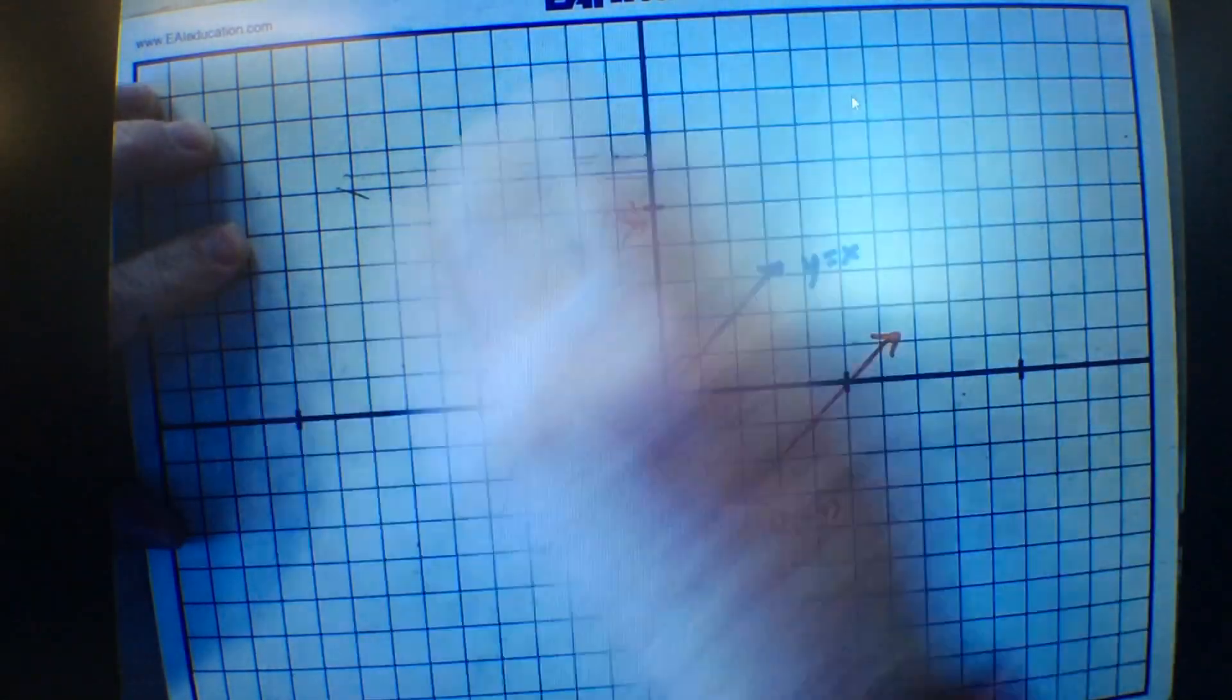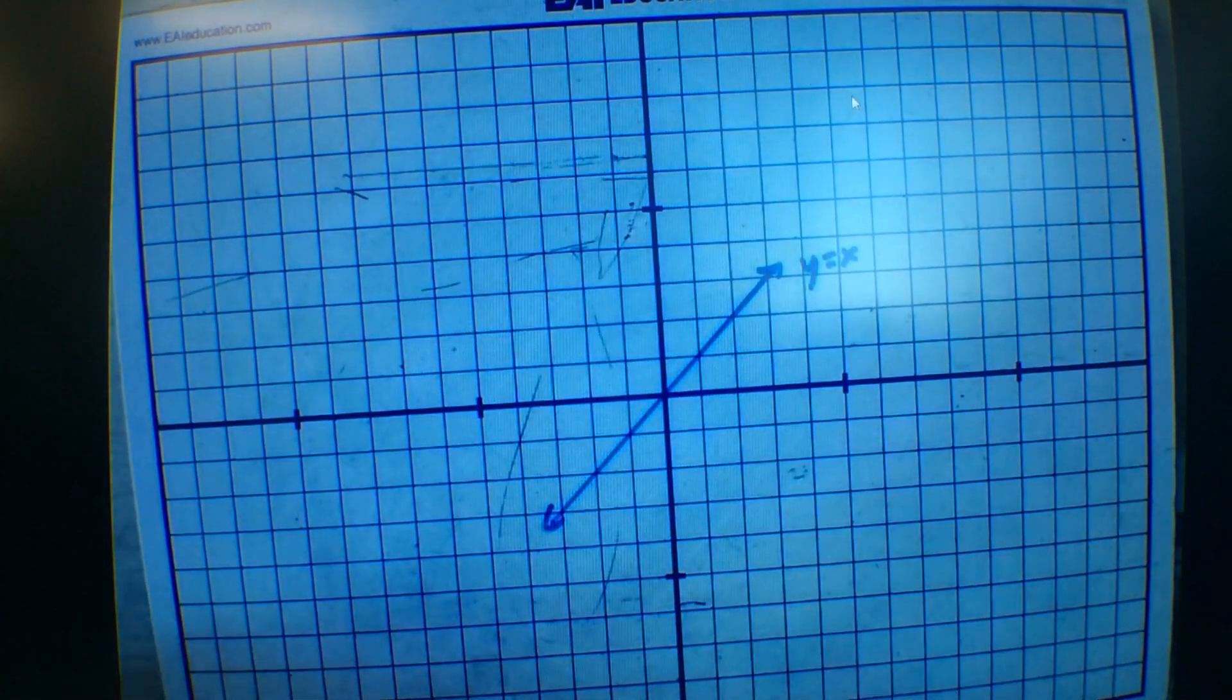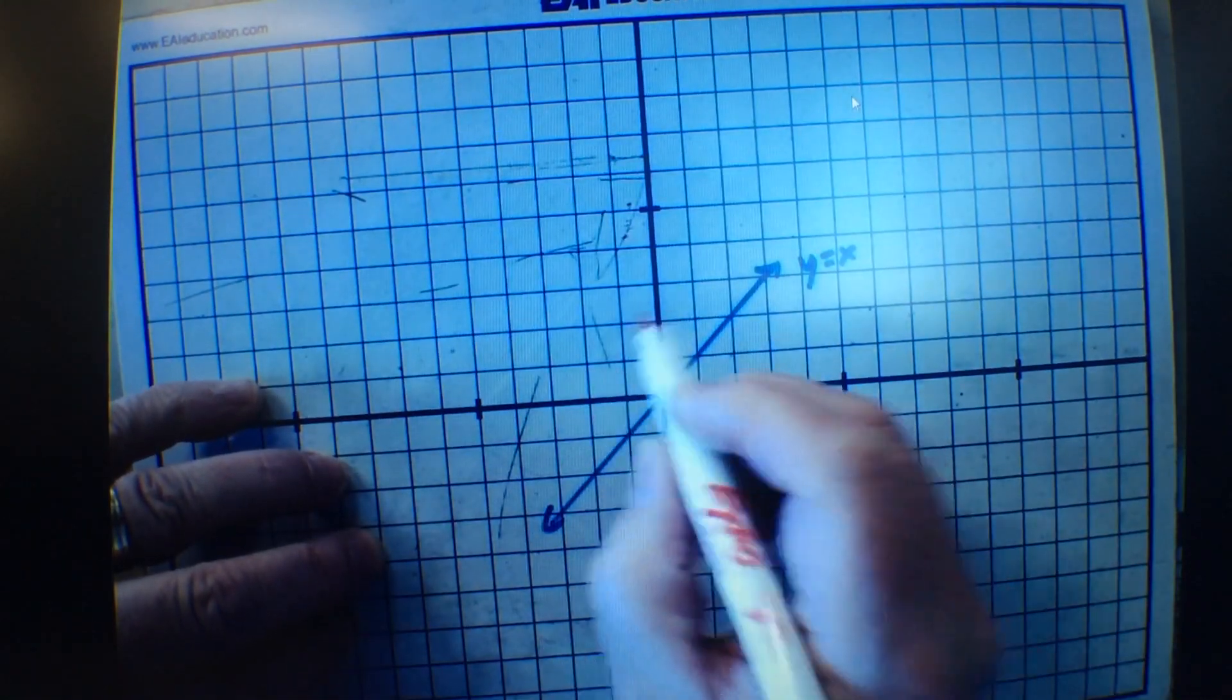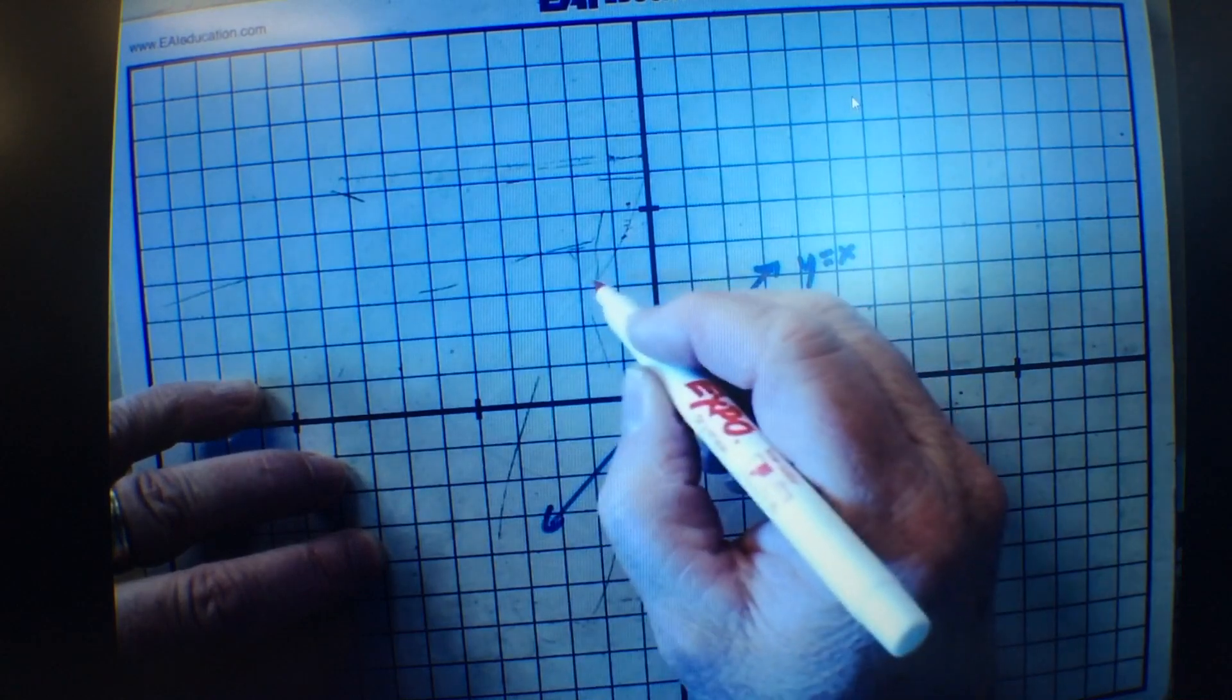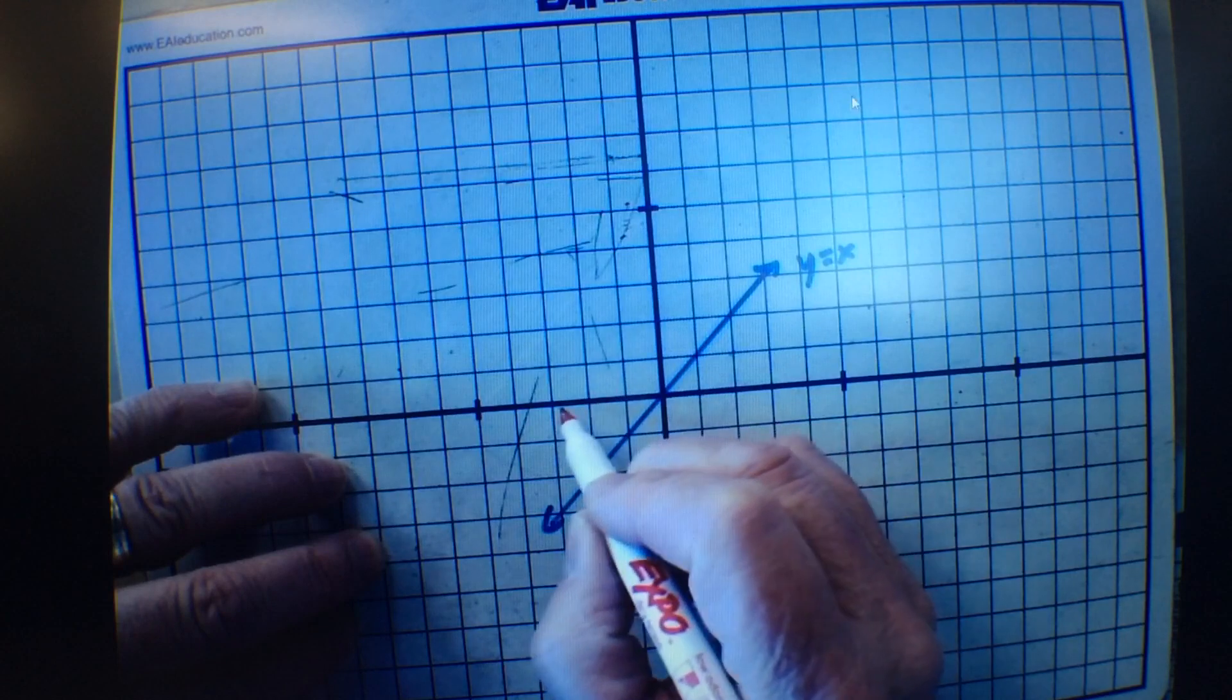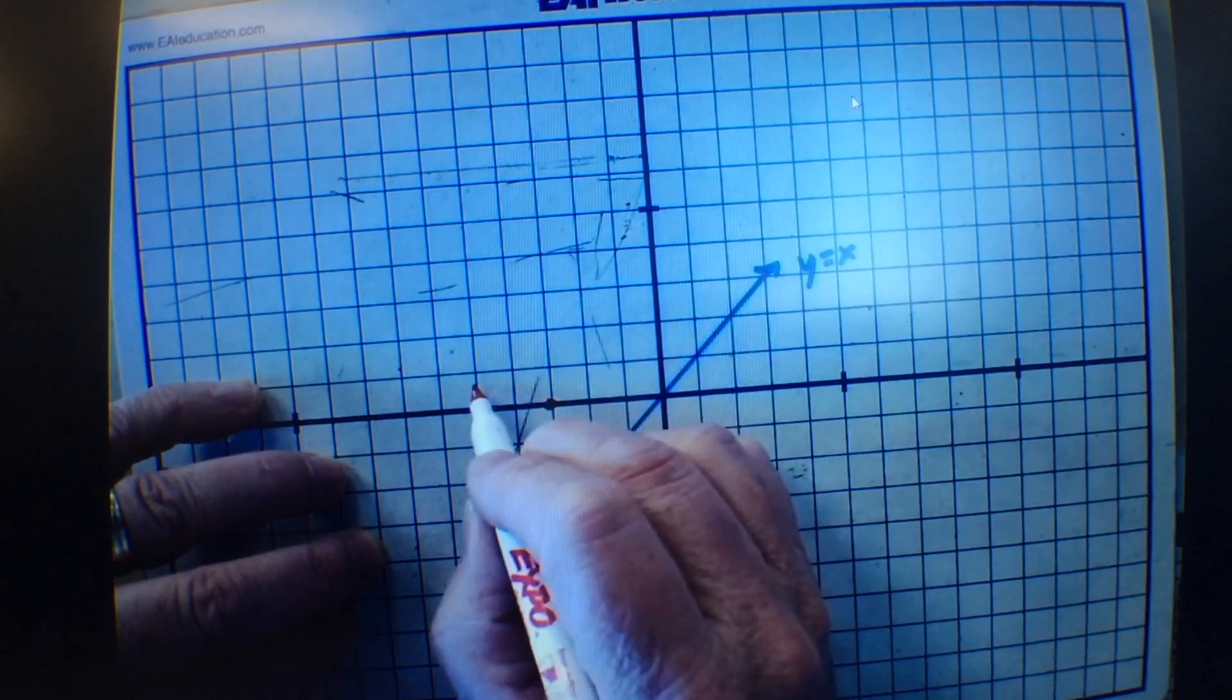Everything that has an inverse reflects over that line. Whether it's a parallel line, whatever. It reflects over that line. And that line is y equals x. This line is y equals x. Everything reflects over it. Now, what Jackson said is true. I'm going to show you this.